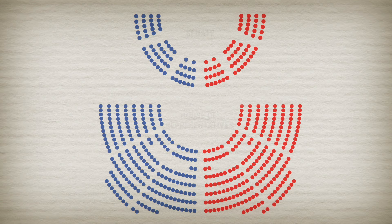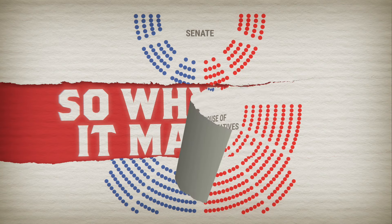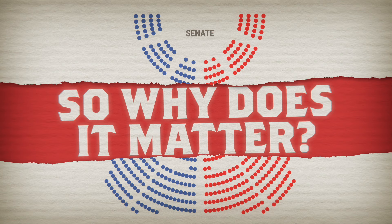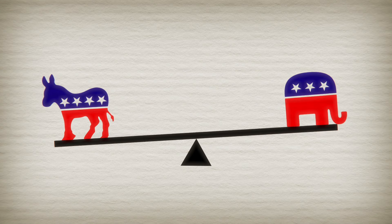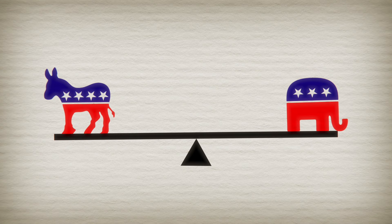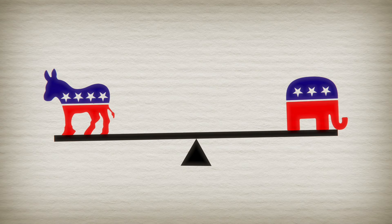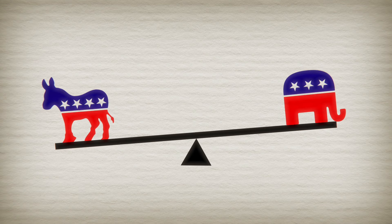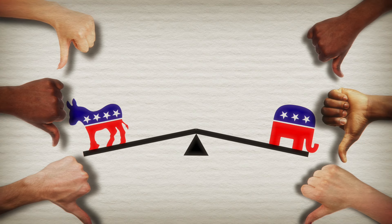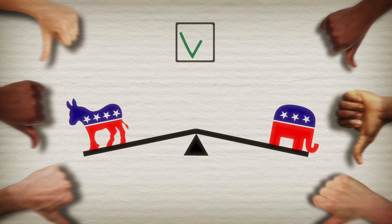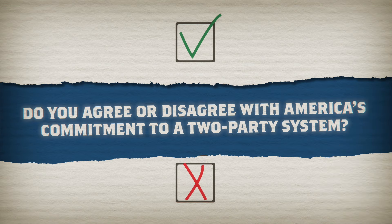They're often called the right and the left, because of where they sit in Congress. So, why does it matter? While the two-party system has been the norm for more than a century, many feel that the diversity of modern American society is not represented and change is needed. Do you agree or disagree with America's commitment to a two-party system?